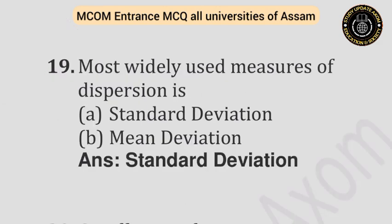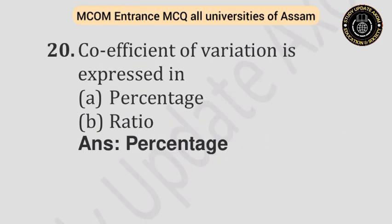Question number nineteen: The most widely used measure of dispersion is — Option A: Standard deviation. Option B: Mean deviation. Answer is standard deviation. Question number twenty: Coefficient of variation is expressed in — Option A: Percentage. Option B: Ratio. Answer is percentage.